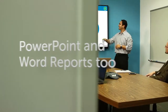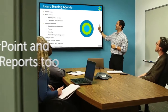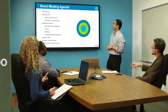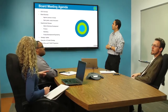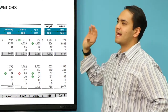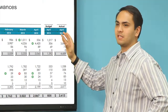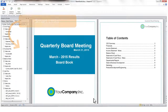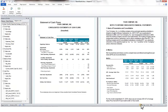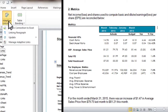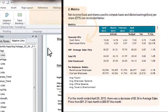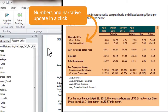Adaptive Office Connect infuses PowerPoint presentations and Word documents too with the same live, always-current data. With innovative SmartLinks, there's no need to copy and paste tables from Excel to PowerPoint and Word every time there is a change.